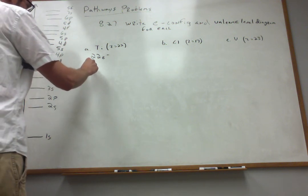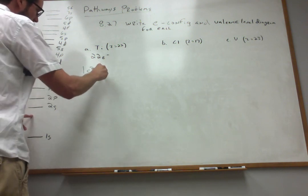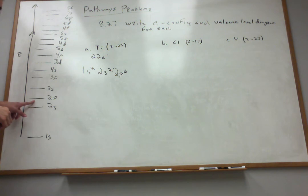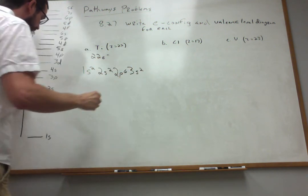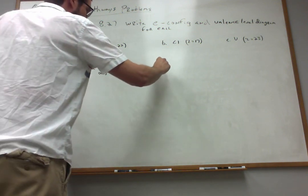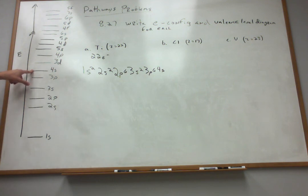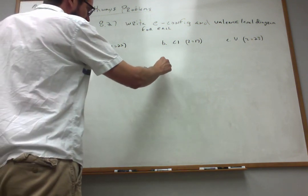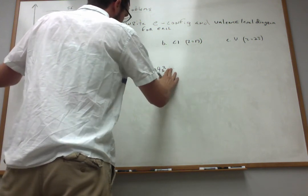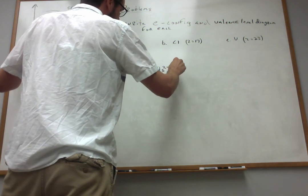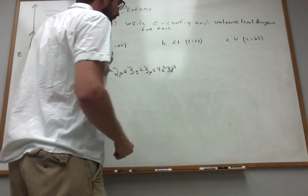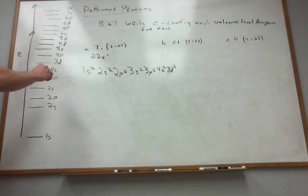We always start with the lowest energy orbital — this is the 1s orbital, two electrons there; two more in the 2s; you can put six in the 2p. So now we've used 10, but we still have 12 more. We put 2 in the 3s, then 3p6. The next place is 4s2, and then 3d2 — because 2+4+10+6 = 22, so I've used all 22 electrons.